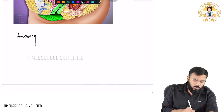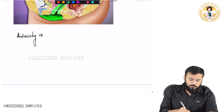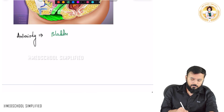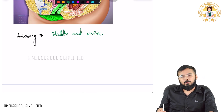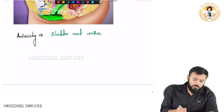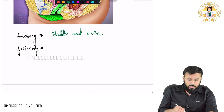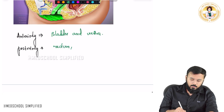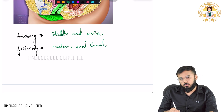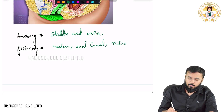Anteriorly, what are the structures you have? Anteriorly you have got bladder and urethra. Next, posteriorly what do you have? Posteriorly you have got rectum, anal canal, and third importantly, another pouch — the pouch that is present between the uterus and rectum is called as the recto-uterine pouch.